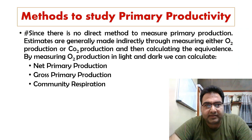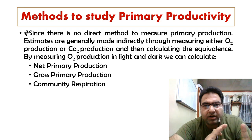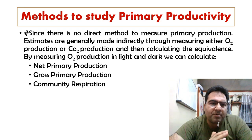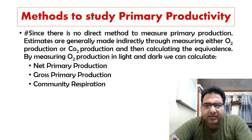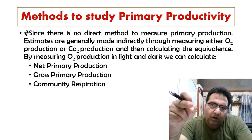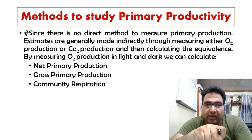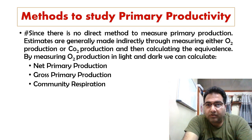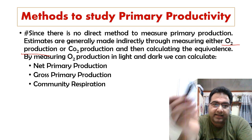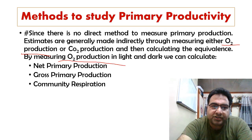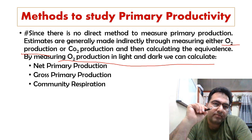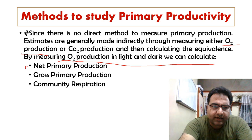Before moving on to the methods to study primary productivity, we should know what net primary productivity is, what gross primary productivity is, and what community respiration is. All these methods are indirect methods — measuring how much oxygen is produced and how much carbon dioxide is consumed or produced in respiration, or by measuring oxygen production in light and dark cycles.